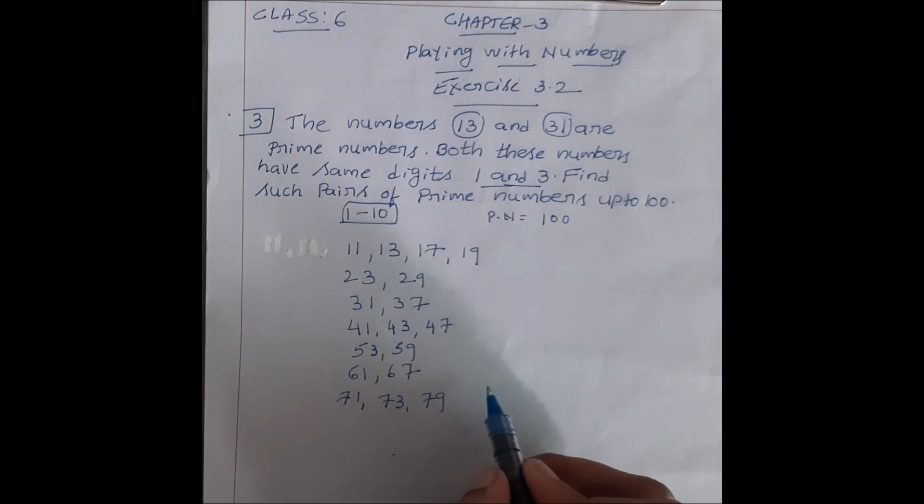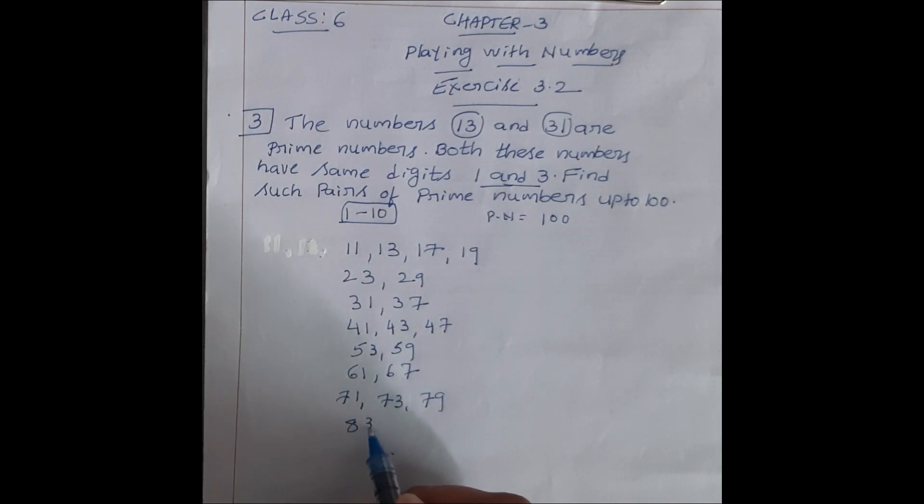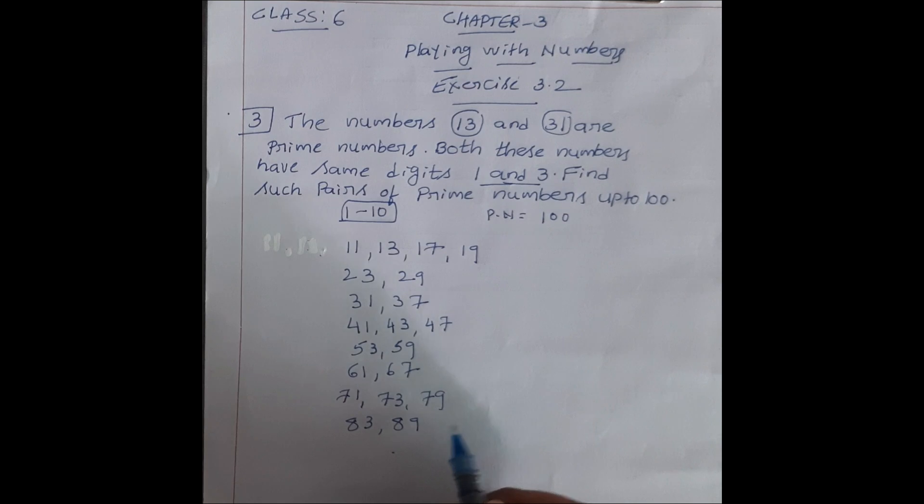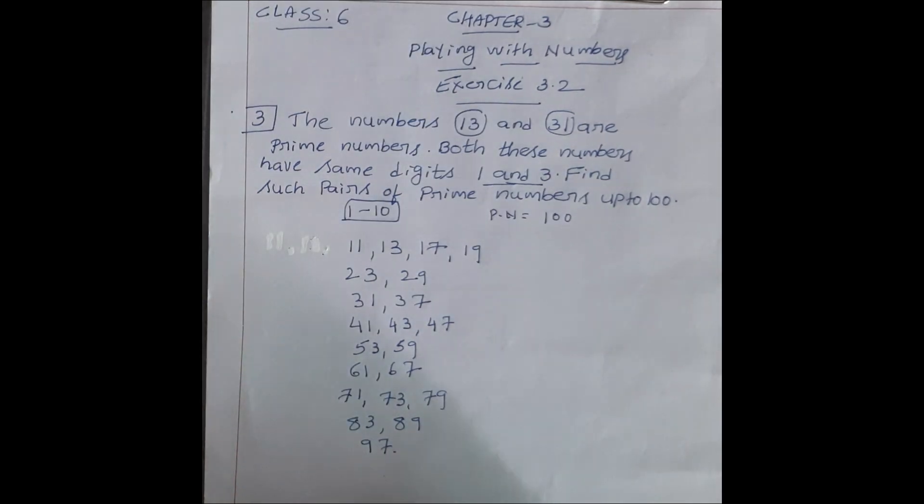Next 80 prime number nahi hai, 81 prime number nahi hai, 82 nahi hai, 83 prime number. 84 prime number nahi hai, 85 nahi hai, 86 nahi hai, 87 nahi hai, 88 nahi hai, 89 prime number hai. Next 90 prime number nahi hai, 91 bhi nahi hai, 92 bhi nahi hai, 93 nahi hai, 94 nahi hai, 95 nahi hai, 96 nahi hai, next 97 prime number hai. Next 98, 99 prime number nahi hai, up to 100 tak hi pocha hai. Is liye yahan tak sab likh diye.